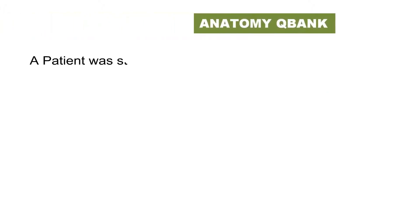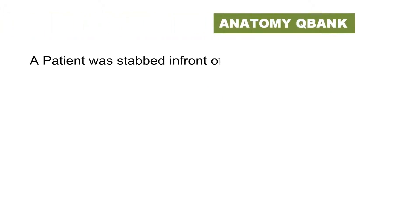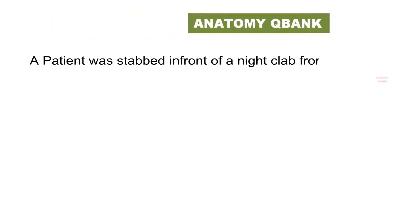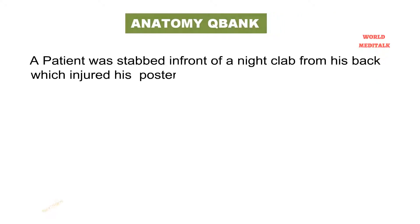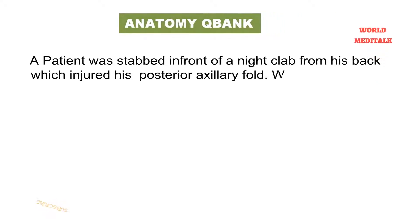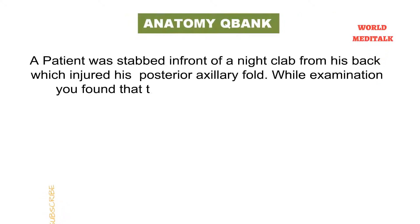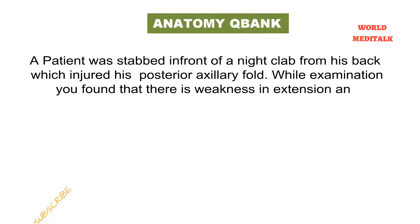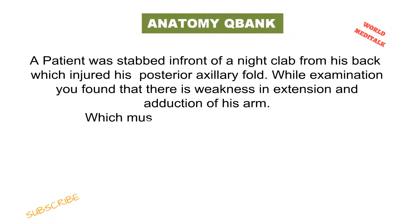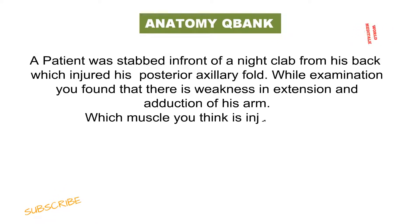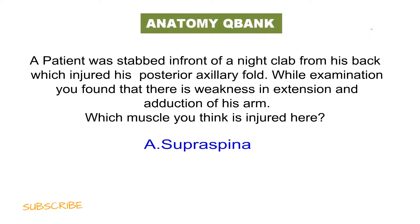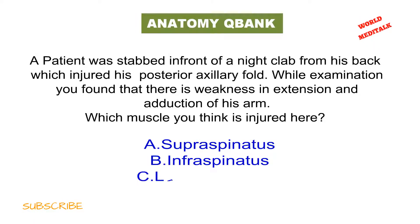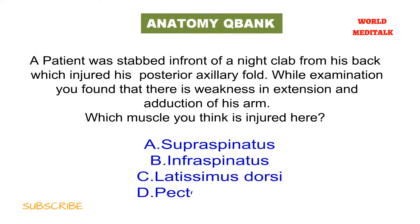A patient was stabbed in front of a nightclub from his back, which injured his posterior axillary fold. During examination, you found weakness in extension and adduction of his arm. Which muscle do you think is injured? Options: supraspinatus muscle, infraspinatus muscle, latissimus dorsi, or pectoralis major.